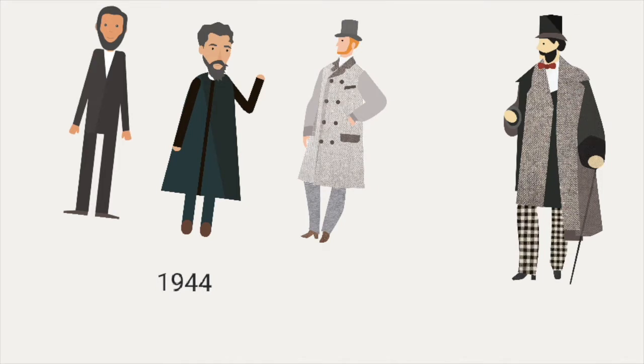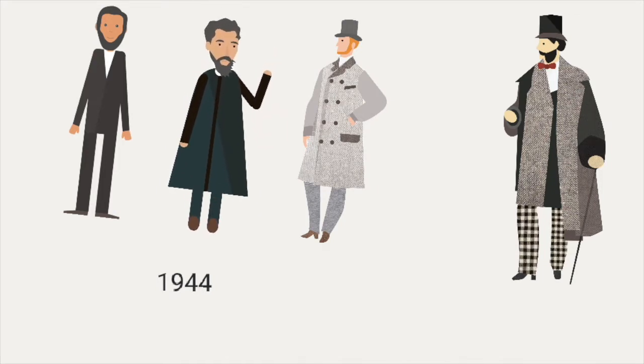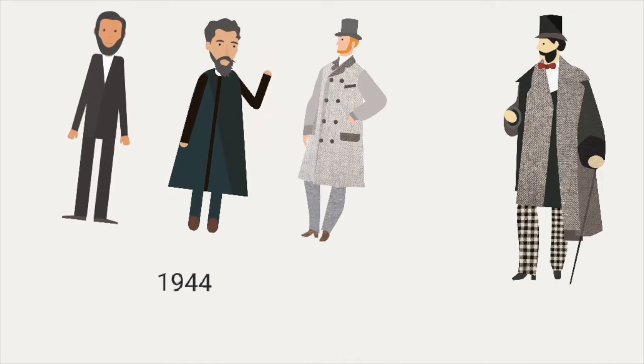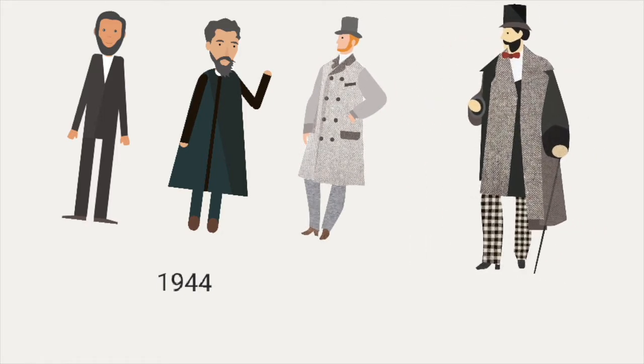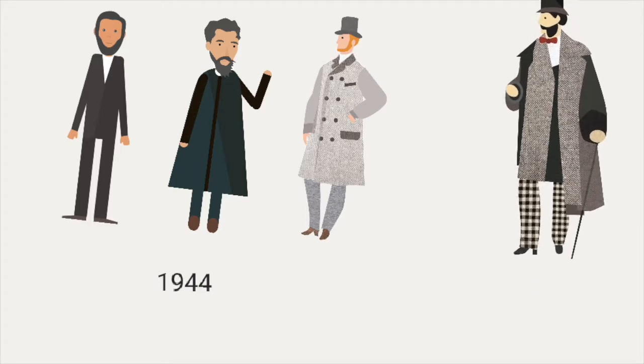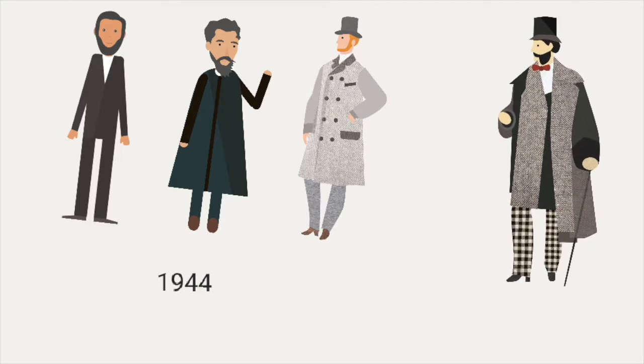In 1944 came Oswald Avery, Colleen McLeod, and Macklin McCarthy, who took great interest in Griffith's experiment that hypothesized that DNA is a hereditary material.